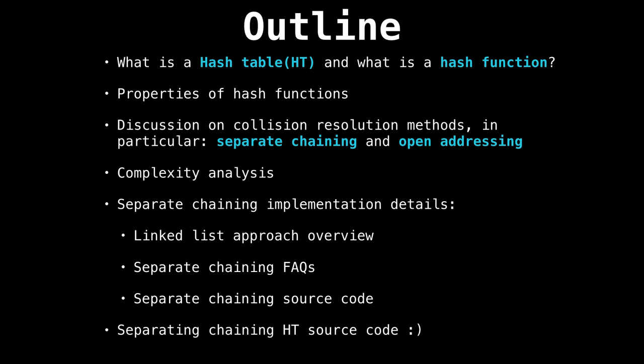There's going to be a lot of things to cover in the hash table series. We're going to start off with what's a hash table and what the heck is a hash function, and why do we need one. Then we're going to talk about some popular collision resolution methods, in particular, separate chaining and open addressing. Those are the two most popular ones, although there's a ton more.